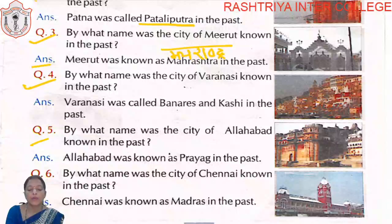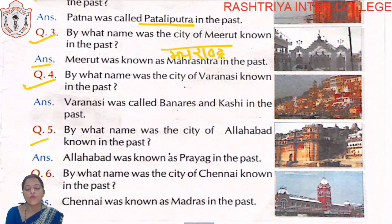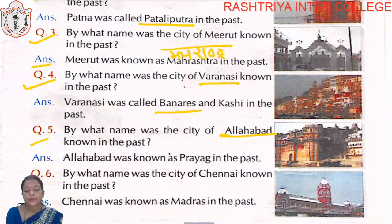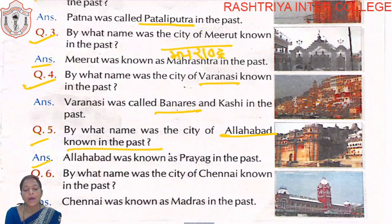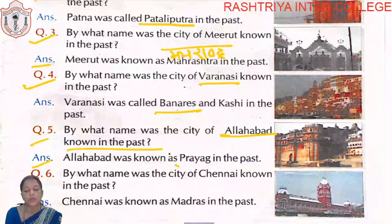Question number five: By what name was the city of Allahabad known in the past? Allahabad was known as Prayag in the past.